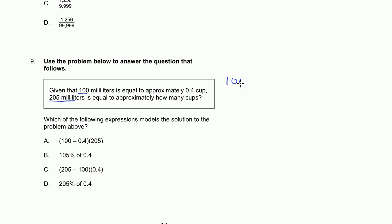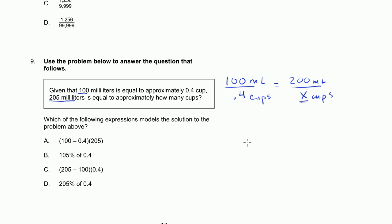We could say 100 milliliters is to 0.4 cups as 205 milliliters is to how many cups? And so we just have to solve for x. To solve for x, we could essentially cross-multiply, which is essentially just multiplying both sides of the equation by both denominators.